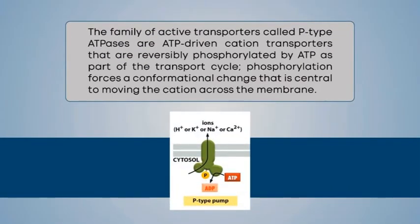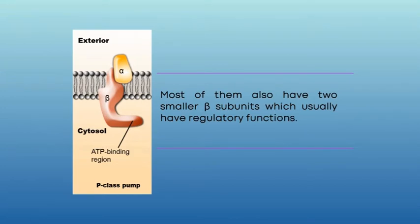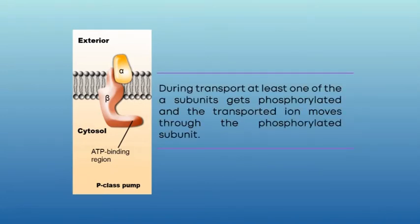Now let's study the P-class ion pumps. The family of active transporters called P-type ATPases are ATP-driven cation transporters that are reversibly phosphorylated by ATP as part of the transport cycle. Phosphorylation forces a conformational change that is central to moving the cation across the membrane. All P-class ion pumps possess two identical catalytic alpha subunits, each containing an ATP binding site. Most of them also have two smaller beta subunits which usually have regulatory functions. During transport, at least one of the alpha subunits gets phosphorylated and the transported ion moves through the phosphorylated subunit. The amino acid sequences around the phosphorylated residues are homologous in different pumps.